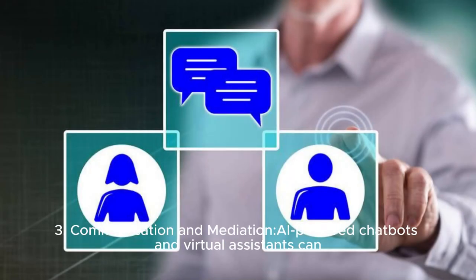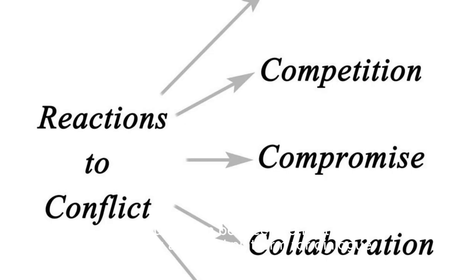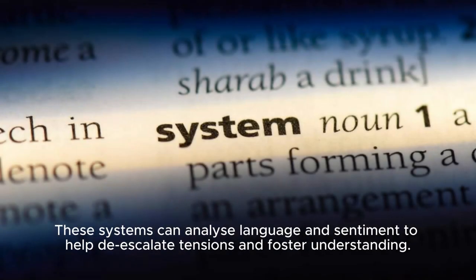Communication and Mediation: AI-powered chatbots and virtual assistants can facilitate communication between conflicting parties by providing a neutral platform for dialogue. These systems can analyze language and sentiment to help de-escalate tensions and foster understanding.